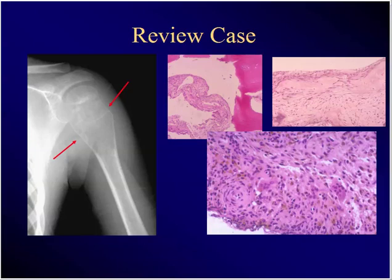Young person, serendipitous find after a fall — expansile lesion of the proximal humerus that abuts the physis. Here's the histopath. What's the diagnosis? Simple bone cyst.